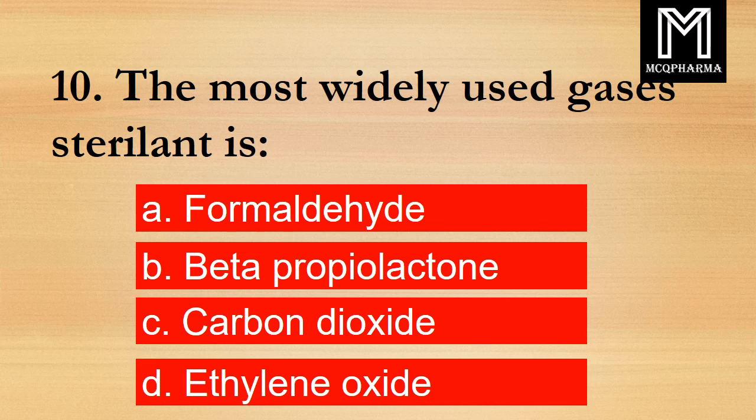Question number 10. The most widely used gas sterilization is? Option A: Formaldehyde. B: Beta-propylactone. C: Carbon dioxide. D: Ethylene oxide. Correct answer: Option D, Ethylene oxide.